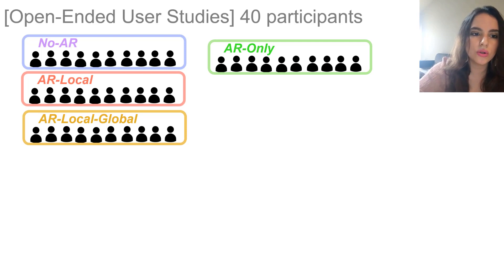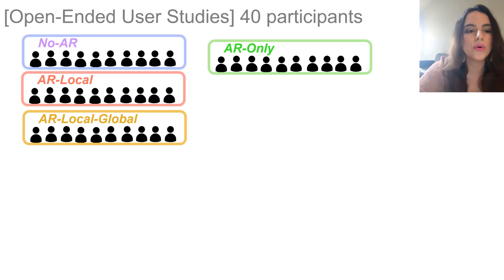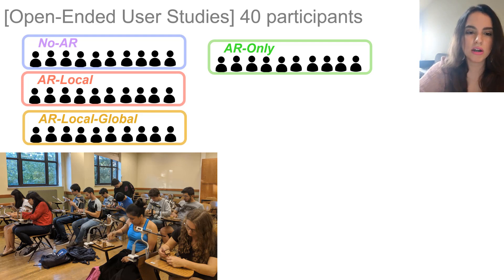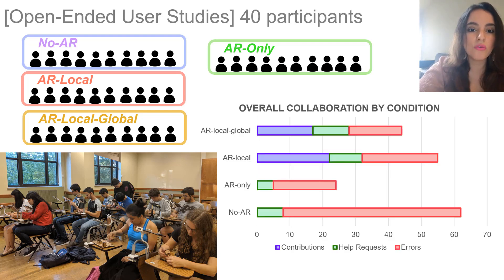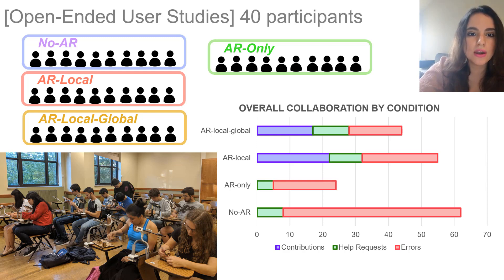We can observe that introducing AR into the classroom decreases overall error per class during problem solving. Also, there was a large number of contributions for the AR local and the AR local global conditions from students to their peers, which were requested, answered, or volunteered. Similarly, the number of help requests for the AR conditions mimics the amount of interaction in a non-AR classroom.